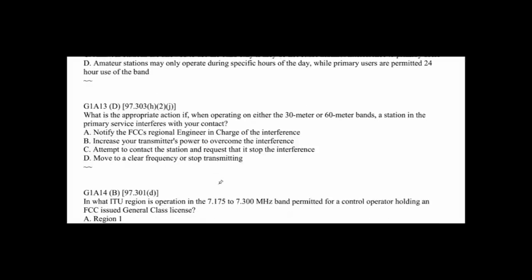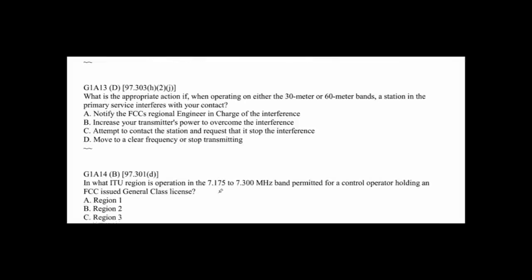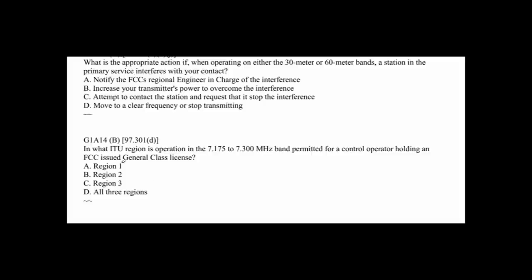G1A13: What is the appropriate action if, when operating on either 30 or 60 meters, a station in the primary service interferes with your contact? The answer is D — move to a clear frequency or stop transmitting. You are a secondary user. G1A14: In what ITU region is operating in the 7.175 to 7.3 MHz band permitted for a control operator holding a general class license? The answer is Region 2.